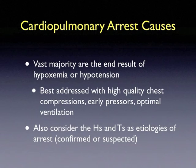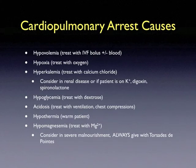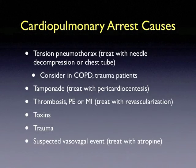The code leader and code team should also consider the H's and T's as etiologies of arrest. These include hypovolemia, hypoxia, hyperkalemia, hypoglycemia, acidosis, hypothermia, and hypomagnesemia. Additional arrest causes include tension pneumothorax, tamponade, pulmonary embolus or myocardial infarction, toxins, trauma, and other suspected vasovagal events.